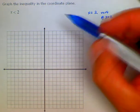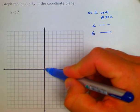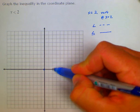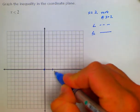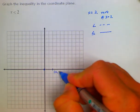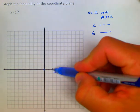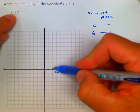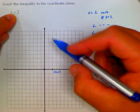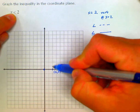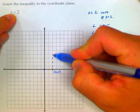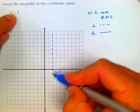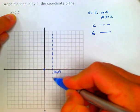So we start from the origin and we come over positive 1, positive 2. This is the point 2, 0. And at this point, we would have a vertical line. And we see that x is less than not equal to, so we would have a dashed vertical line telling us that the line itself is not included in the solution set.